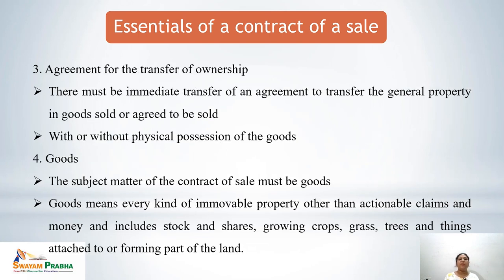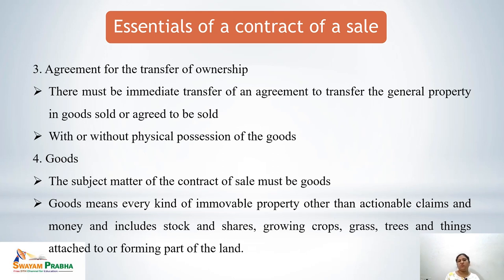The third essential is an agreement for the transfer of ownership. There must be immediate transfer of, or an agreement to transfer, the general property in goods sold or agreed to be sold. If only physical possession is given, this cannot be held as a valid sale. The ownership must be transferred immediately for a contract to qualify as a valid sale.